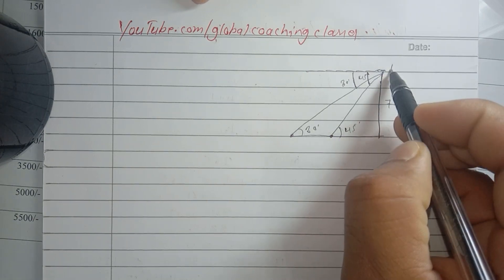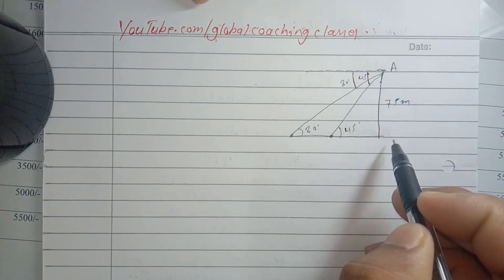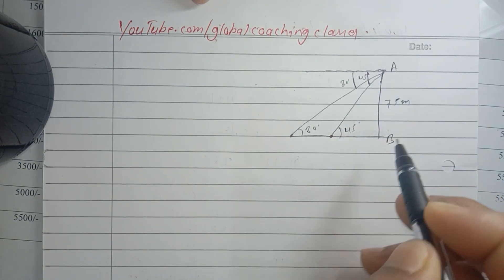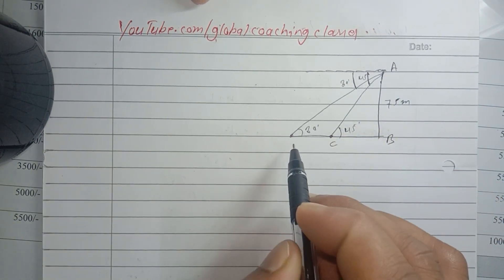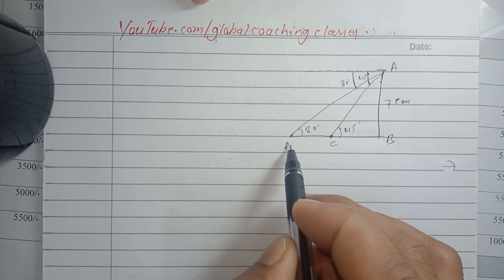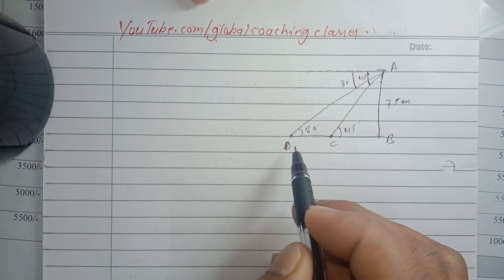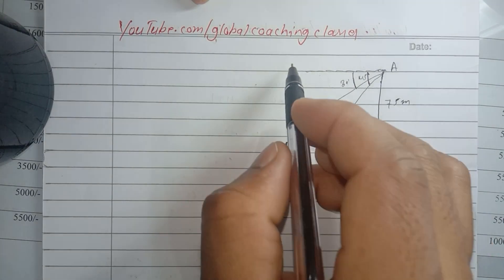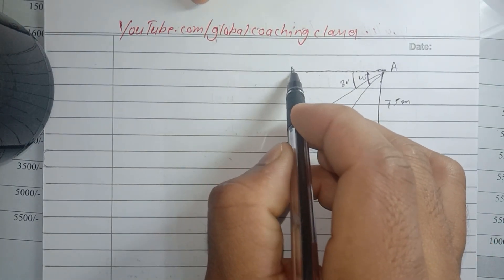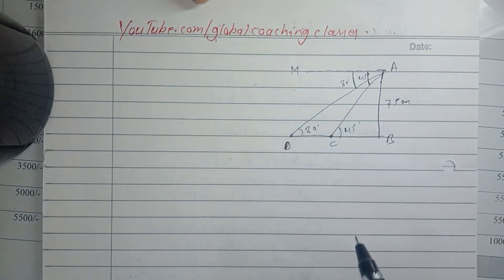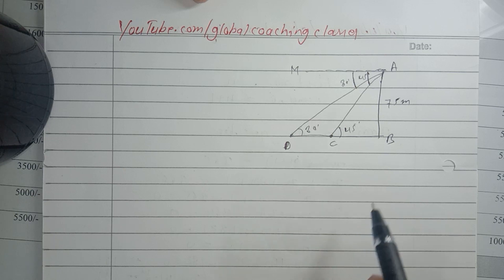तो देखिए हम इनको पहले, सबसे पहले नाम दे देते हैं - A, B, C, D हमने ये नाम दे दिया। इसको भी हम नाम दे देते हैं, for example M हमने नाम दे दिया।